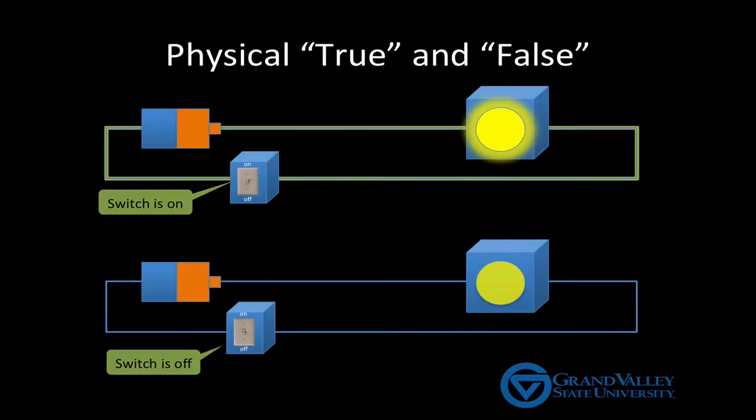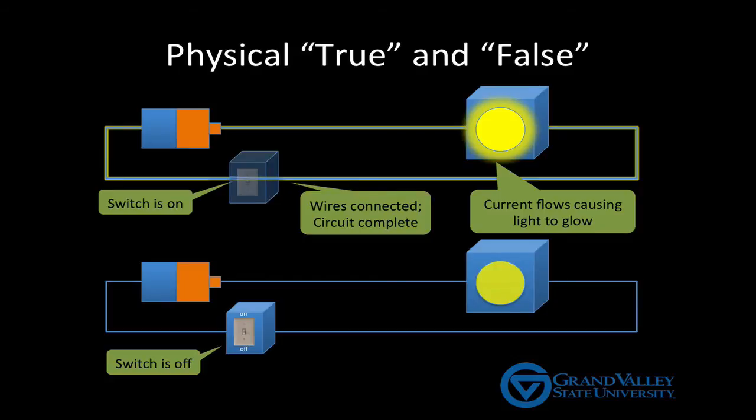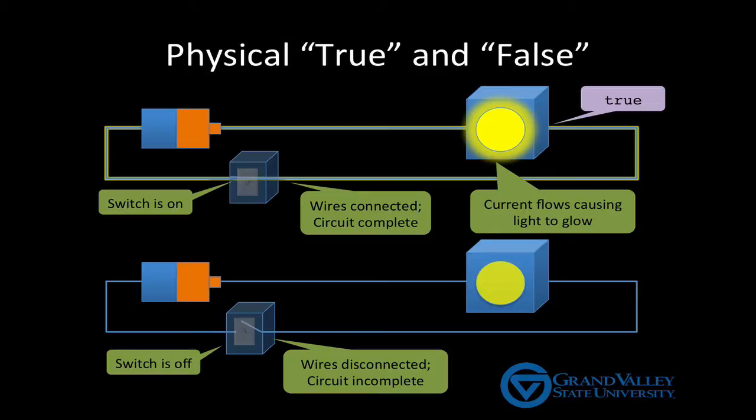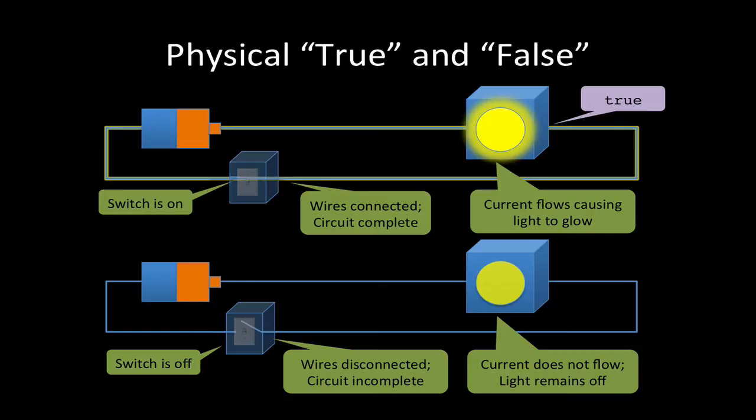In the top diagram, the switch is ON, which completes the electric circuit causing the light to glow. I'm going to call this state where current is flowing and the light is ON a logical TRUE. In the bottom diagram, the switch is OFF, which breaks the electric circuit and prevents the flow of current. As a result, the light stays OFF. I'm going to call this state where current is NOT flowing and the light is OFF a logical FALSE.